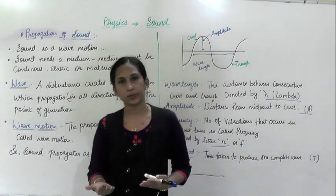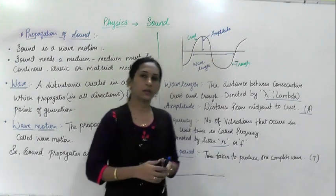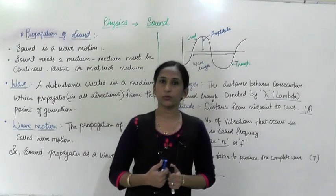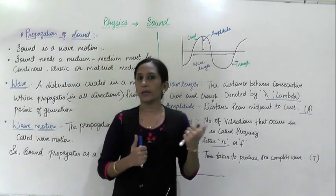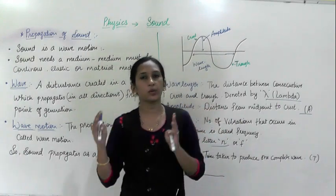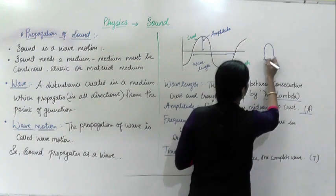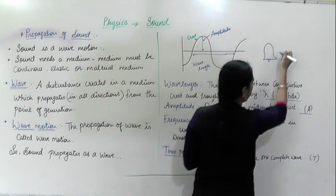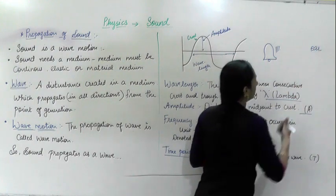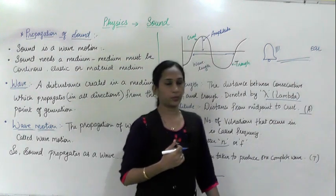I am going to explain how sound travels from a point to the listener's ear. As an example — if a bell is ringing, how does the sound of the bell propagate from that place to our ears? Suppose this is the bell. The bell rings, it produces sound, and this sound travels from one place and reaches our ear. This propagation is what we are going to study.